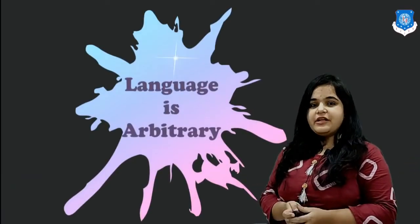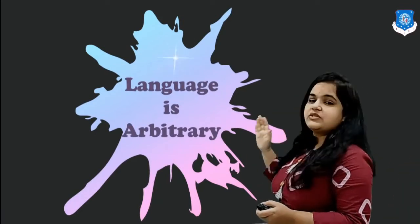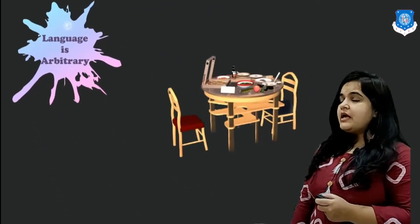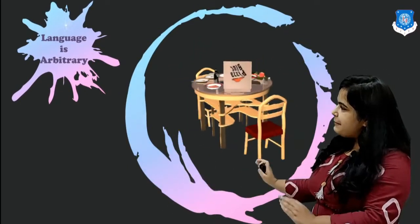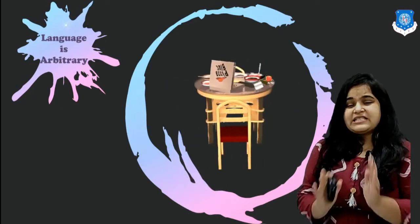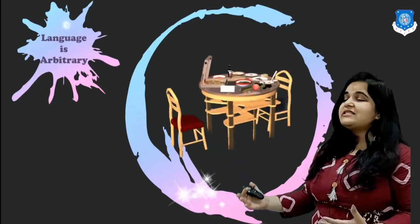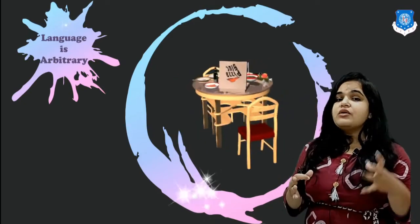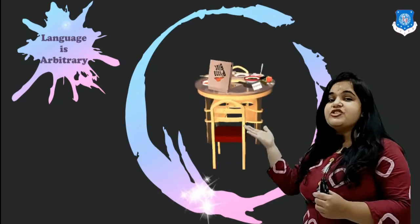Moving on to the next characteristic — language is arbitrary. Language does not have any particular sequence or steps or format. Say for example, if I ask you what is this, you would say 'this is a table.' Actually, it is a wooden plank having four legs. How does a wooden plank with four legs have anything to do with the word 'table'? There is a large difference. So 'table' is an arbitrary word — many times there is no relationship between the word and the actual item which the word indicates.